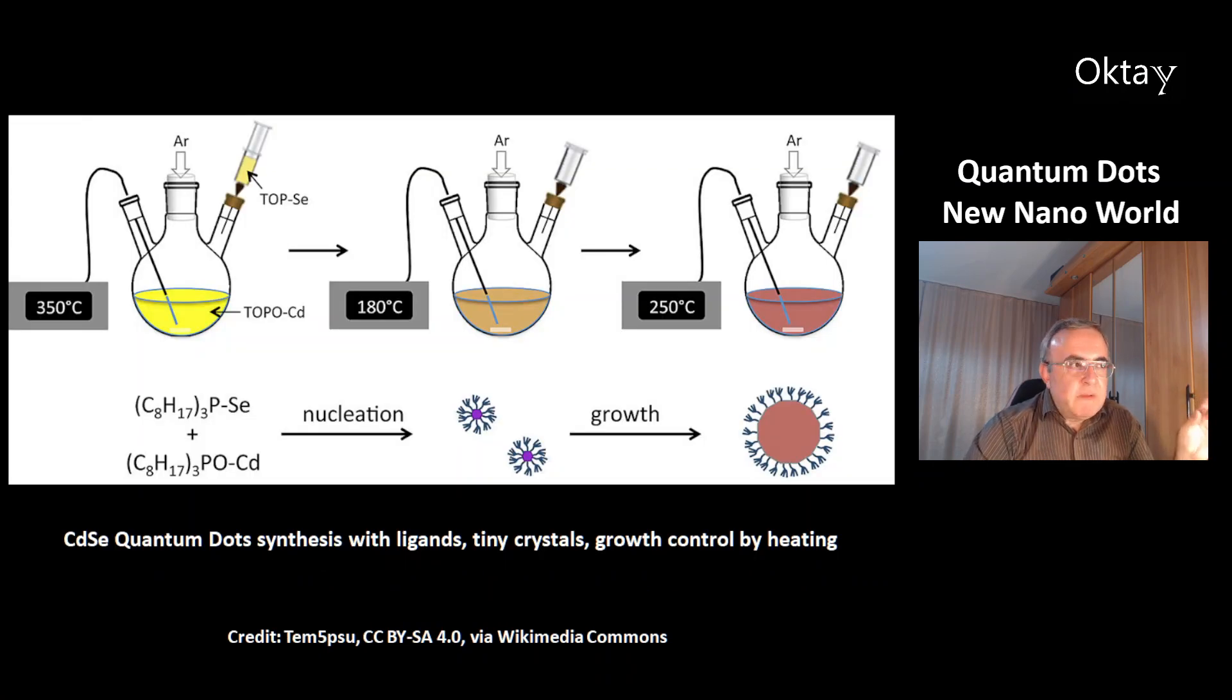This is an example of the synthesis of cadmium selenite quantum dots with ligands. You have these two organometallic compounds heated to 180 degrees Celsius. When you get a nucleation, you get the smallest quantum dots, tiny crystals. And the next step only happens if you heat it to 250 degrees Celsius. This is the way to control the growth of the quantum dots by controlling the time for heating.